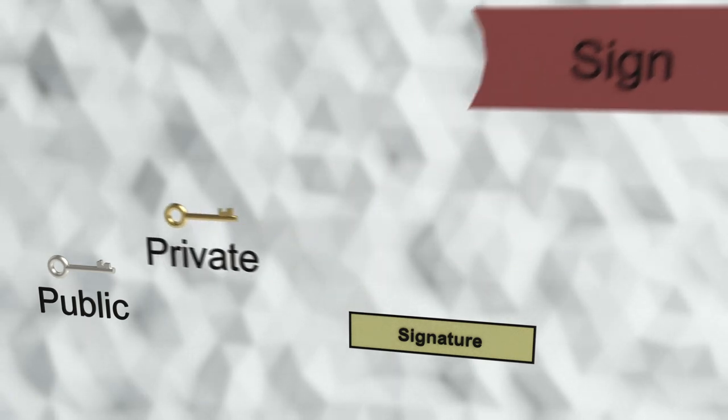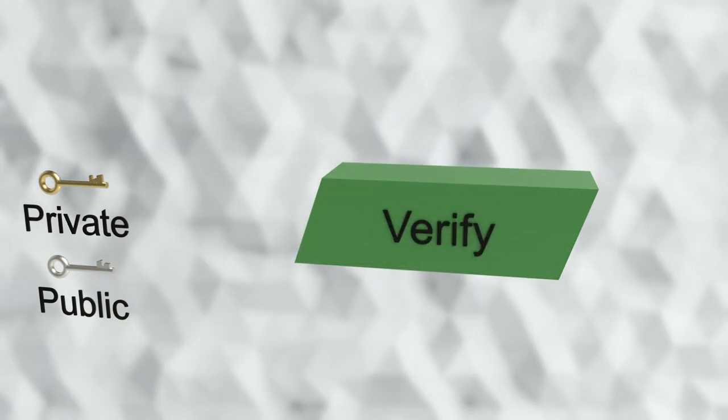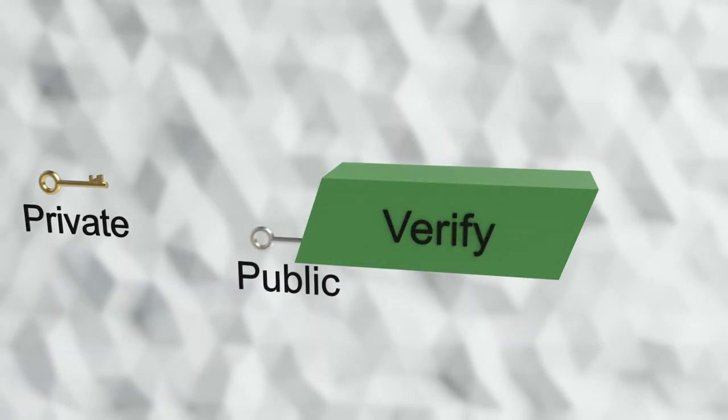The second operation takes this message, the digital signature, and the public key, and determines if this signature was indeed created by that message using the private key associated with this signature.